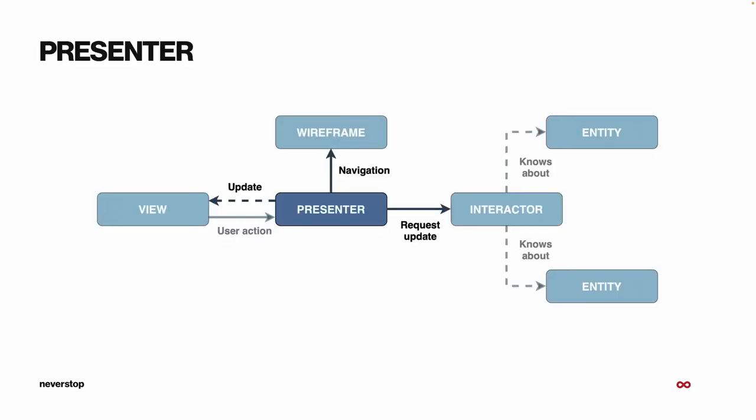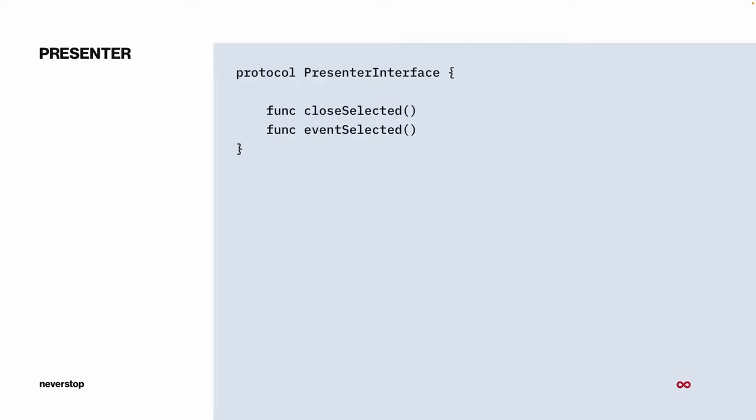Now we get to the Presenter — the main part of the module, sitting neatly in the middle. It's the glue that holds the whole thing together. Its job is to update the View, talk to the Wireframe when navigation is needed, and request data updates from the Interactor. A simple Presenter interface has events like close-selected and event-selected — the View reacts to a button action and calls one of these methods, and the Presenter handles it.